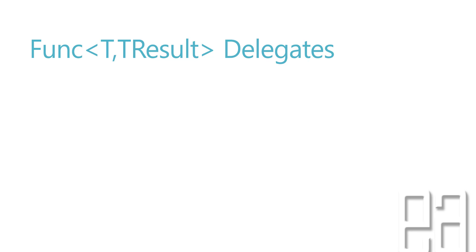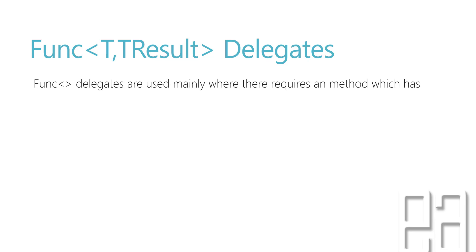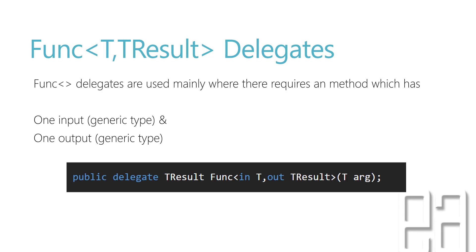Func delegates are Func<T, TResult> delegates. They are used mainly where a method requires one input generic type and one output generic type. If you use a Func delegate, it will return an output regardless of whether you expect it or not. That is the key difference between Func delegates versus Action delegates — Func delegates always return a value, whereas Action delegates never return any value.